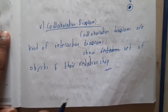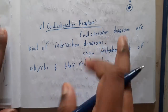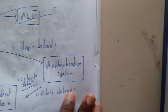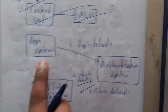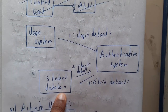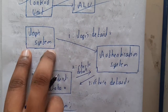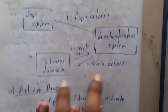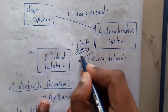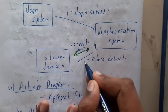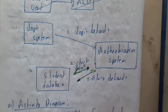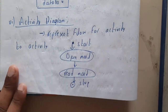The collaboration diagram represents the relationship between objects. We set up relationships between objects — for example, Login System, Authentication System, and Student Database. Login sends login details, Authentication checks the details, and returns the result. The flow between objects is written in the collaboration diagram.